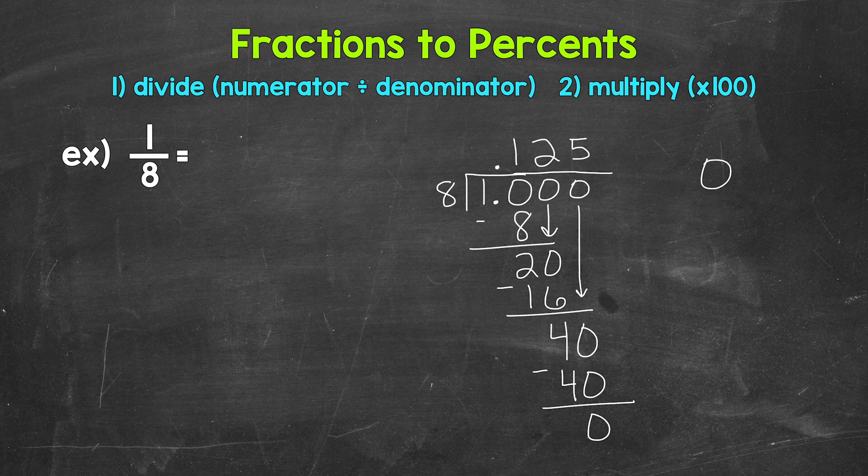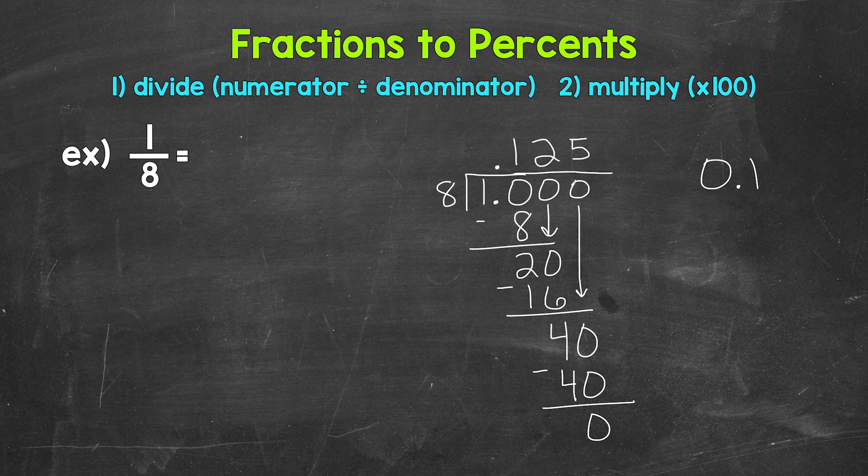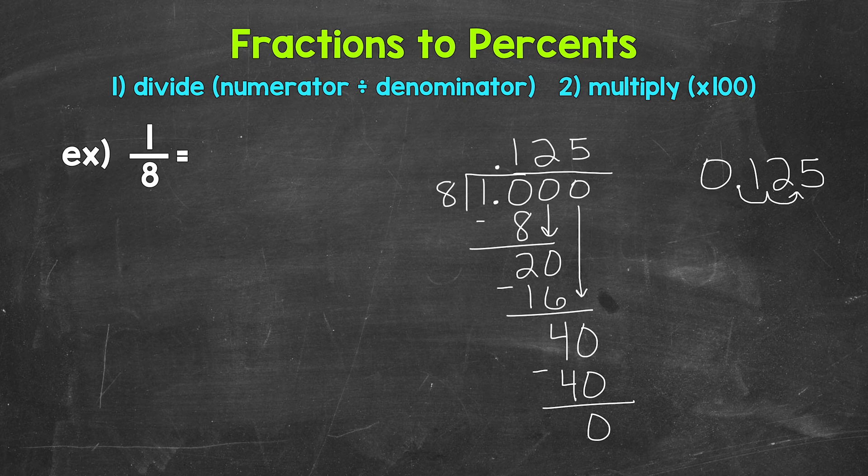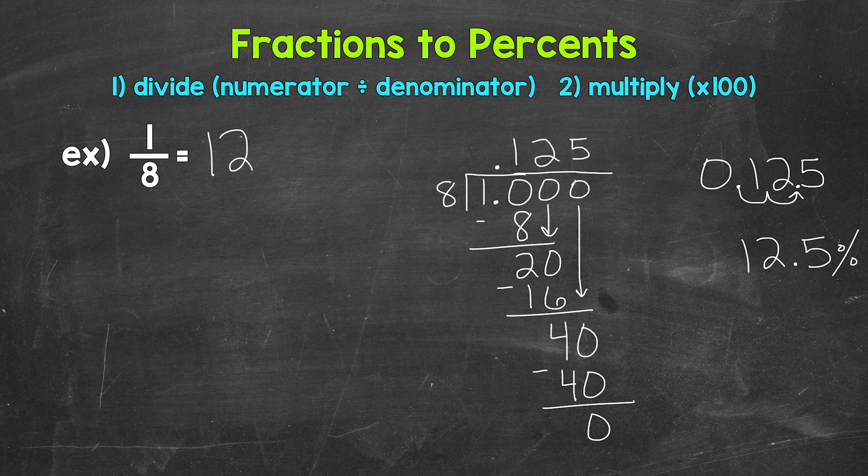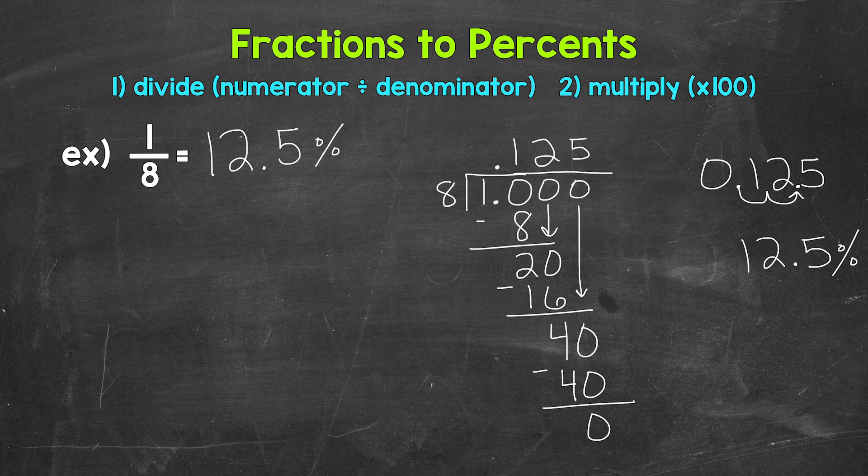So let's rewrite our decimal off to the side here and move the decimal once, twice to the right. This gives us 12.5 percent. So 1 eighth equals 12.5 percent.